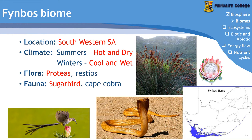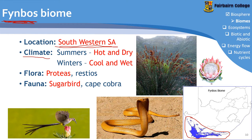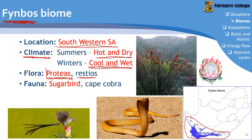The first biome is the Fynbos biome — the biome we live in here in the Western Cape. It is found in the southwestern parts of South Africa. The climate is hot and dry during the summers and cool and wet during the winters, which should be familiar to you. Based on this climate, a very specific type of plants grows in the area, collectively referred to as the Fynbos, which is unique to South Africa and isn't found anywhere else in the world. Two examples of Fynbos are the Proteas and the Restios — you only need to write down Proteas for your table.